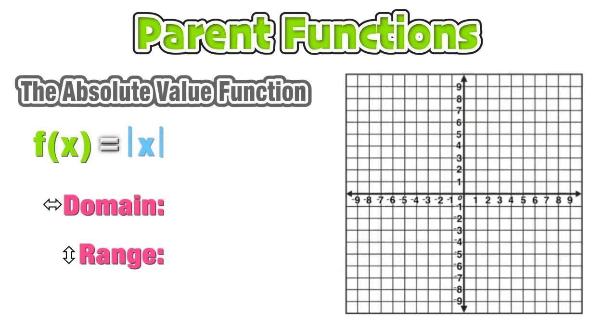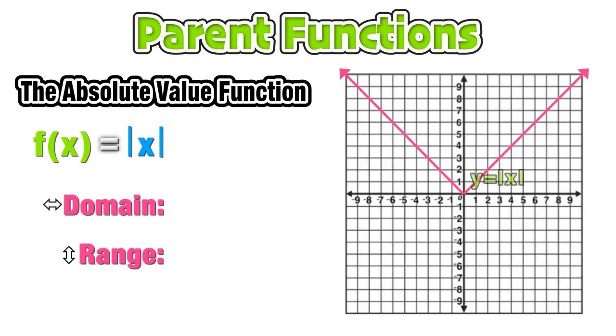Our next parent function is the absolute value function, f(x) = |x|. We know that absolute value is always positive, that helps us to understand why this parent function remains above the x-axis and why the domain is negative infinity to positive infinity, but the range starts at 0 and moves up to positive infinity, but again is never negative.